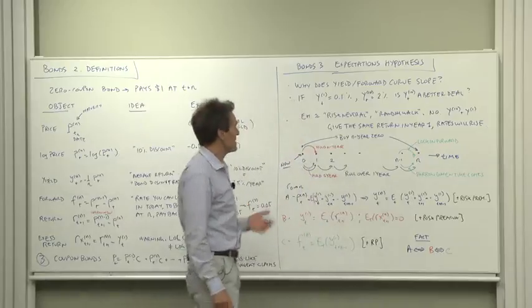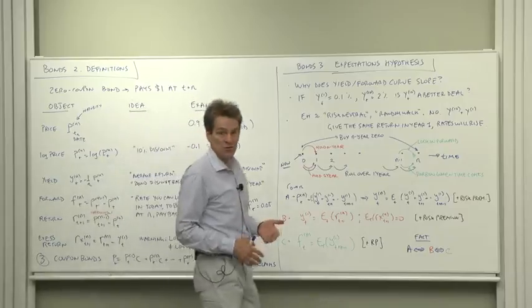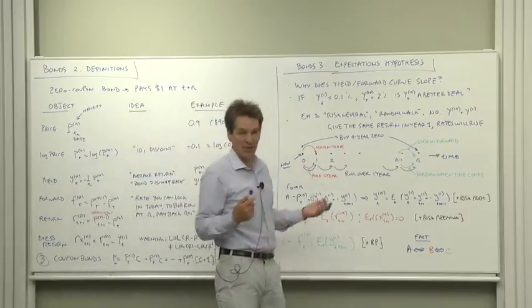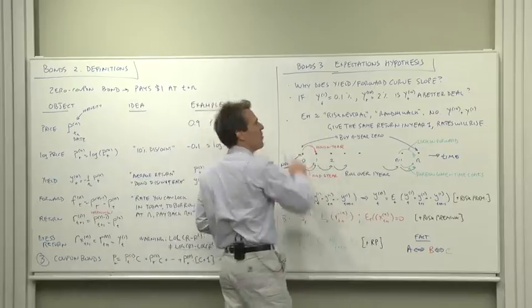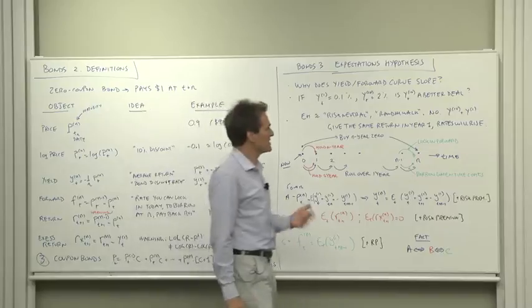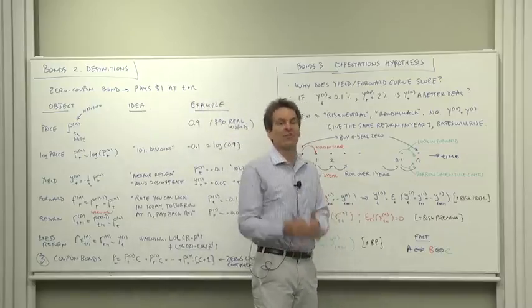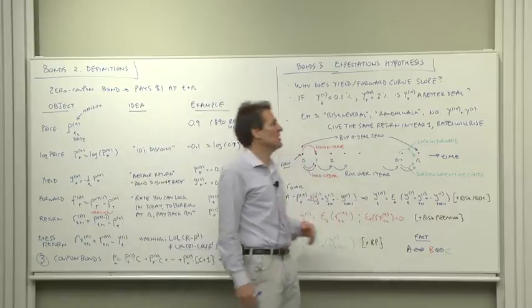The expectations hypothesis says no. It's the version of the random walk, risk-neutral, the starting place of all finance. No, ten-year bonds are not better than one-year bonds. The statement of the expectations hypothesis is ten-year bonds and one-year bonds will do the same for the next year. They're expected to do the same for the next year on average.